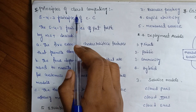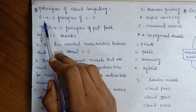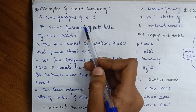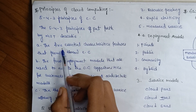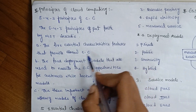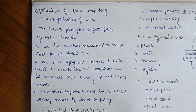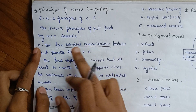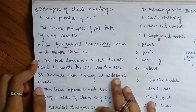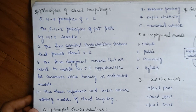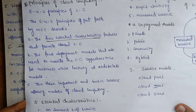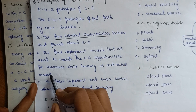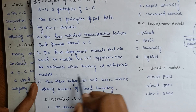The principles of cloud computing are organized as 5, 4, 3. The 5 refers to the 5 essential characteristics that promote cloud computing. The 4 refers to the 4 deployment models that are used to describe cloud computing opportunities for customers while looking at architecture modules.